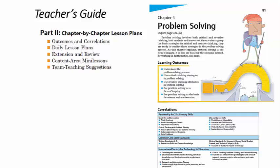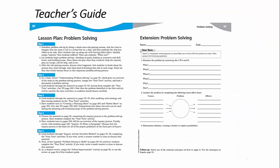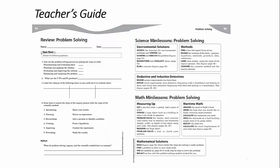Part 2 of the Teacher's Guide includes chapter-by-chapter lesson plans. Each lesson plan begins with learning outcomes and correlations. Then you'll find a daily lesson plan and an extension activity. Afterward, you'll find a review activity that can be used as a quiz. Then mini-lessons for using the chapter in Science, Math, Social Studies, and English.